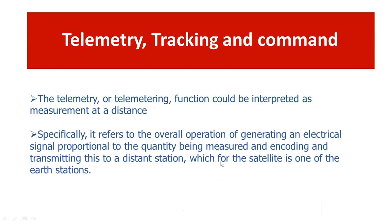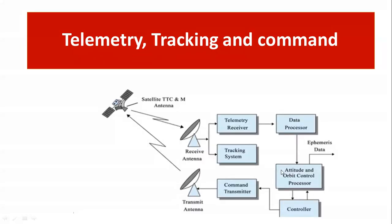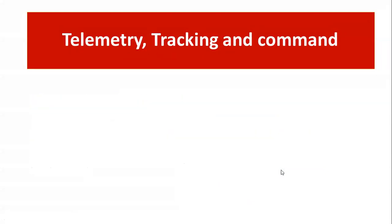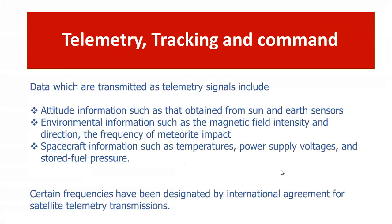The satellite sends telemetry data to the receiving antenna at the earth station. What comes under telemetry includes: attitude information such as that obtained from sun and earth sensors; environmental information such as magnetic field intensity, direction, and frequency of meteorite impact; and spacecraft information such as temperature around the satellite, power supply voltage, operating and stored fuel pressure — all of which are monitored.